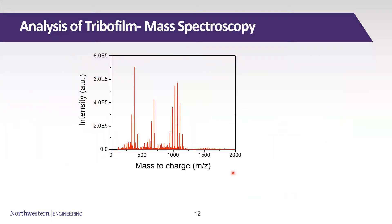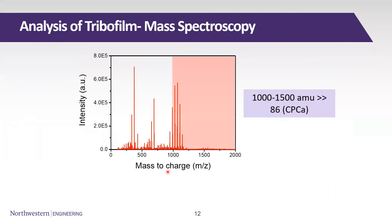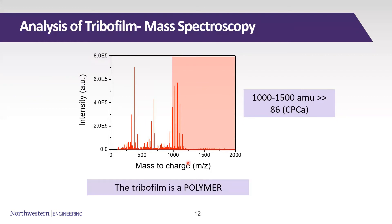Going into the mass spectroscopy results — done on the thermal product due to limited quantity of the friction product — a lot of peaks appear above the 1000 mass-to-charge ratio, which is significantly larger than 86, the atomic mass of CPCA. Here we can conclude that the tribofilm is in fact a polymer.